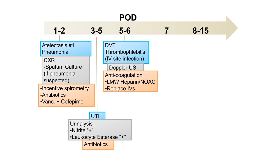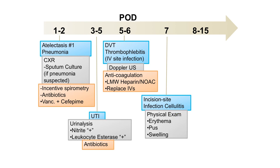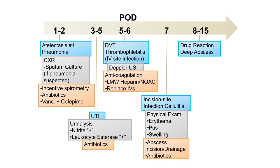Day 7 is the critical one — this is when the incision site becomes an issue. Notice that none of the earlier days involve the actual incision. Day 7 brings cellulitis around the area. Diagnose by physical exam looking for erythema, pus, and swelling. Consider an abscess underneath, so do incision and drainage and start antibiotics. Days 8 to 15 is when drug reaction and deep abscess become an issue — stop the offending agent, do a CT scan for deep abscess, and drain it if found.